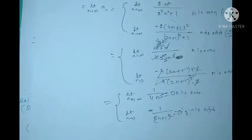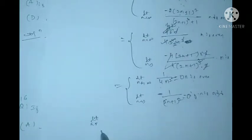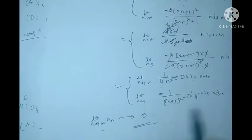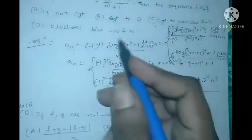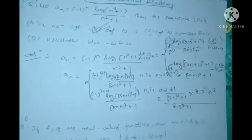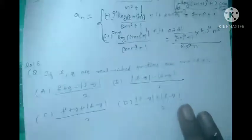Both limits — for n even and n odd — are equal to zero. Therefore limit n→∞ of a_n also converges to zero. The correct option is option B: convergent to zero.